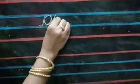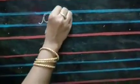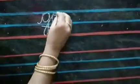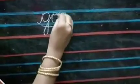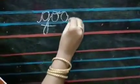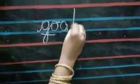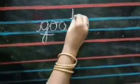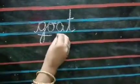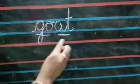G and O is GO. AT you already know. GO and AT is goat.